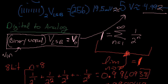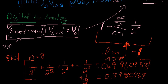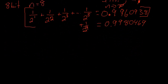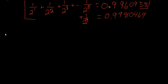So, here we said we have our binary word — our binary word times our least significant bit. This is converted to base 10, which gives us our V out. The other way we could do this is we can say that V out is equal to — let's say we have a binary word of 1, 2, 3, 4, 5, 6, 7, 8.